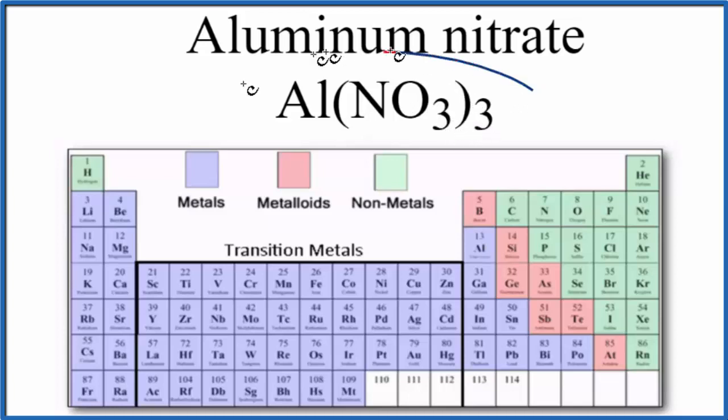The short answer is that the entire compound is an ionic compound. But within the compound, we have this nitrate ion, and the bonds between the nitrogen and the oxygen atoms, those are covalent bonds.